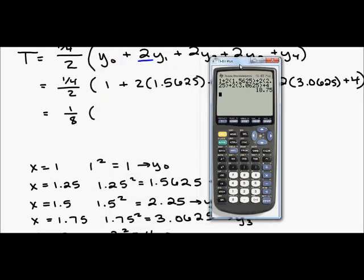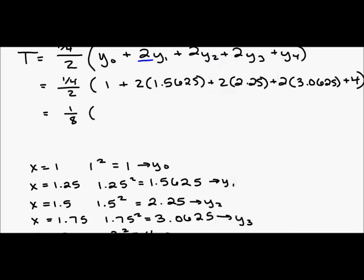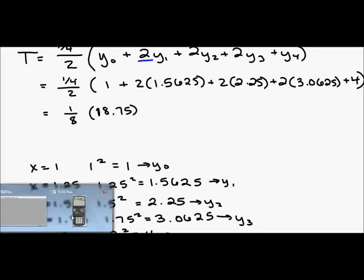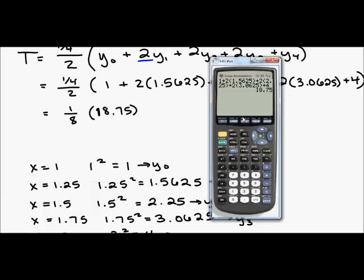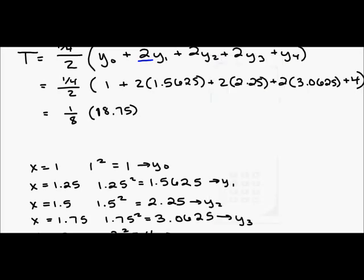So we have 1 plus 2 times 1.5625 plus 2 times 2.25 plus 2 times 3.0625 plus 4. So I have 18.75 in my parentheses. And 1 eighth of 18.75, this divided by 8 is 2.34375. That is a pretty long decimal. So this is what we get using the trapezoidal rule. This is our approximation.